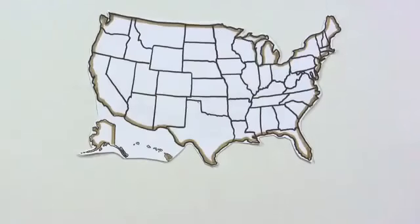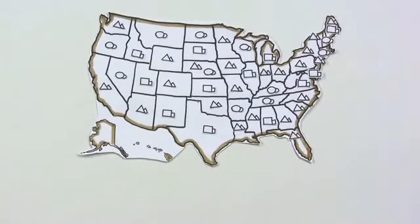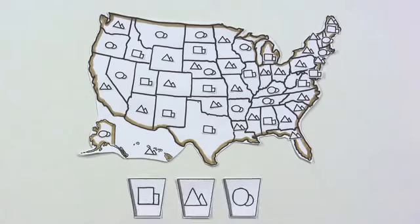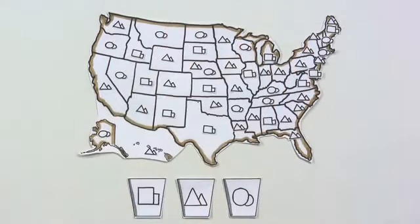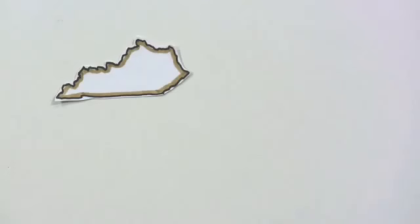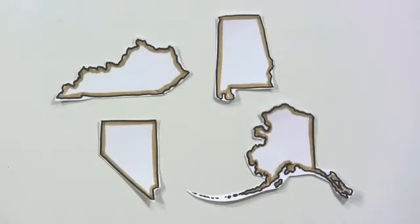We end up with most of the 50 states and the District of Columbia voting to support one candidate each. But there's a problem — we can't elect a president by just counting up the choices of these states, because U.S. states are different.